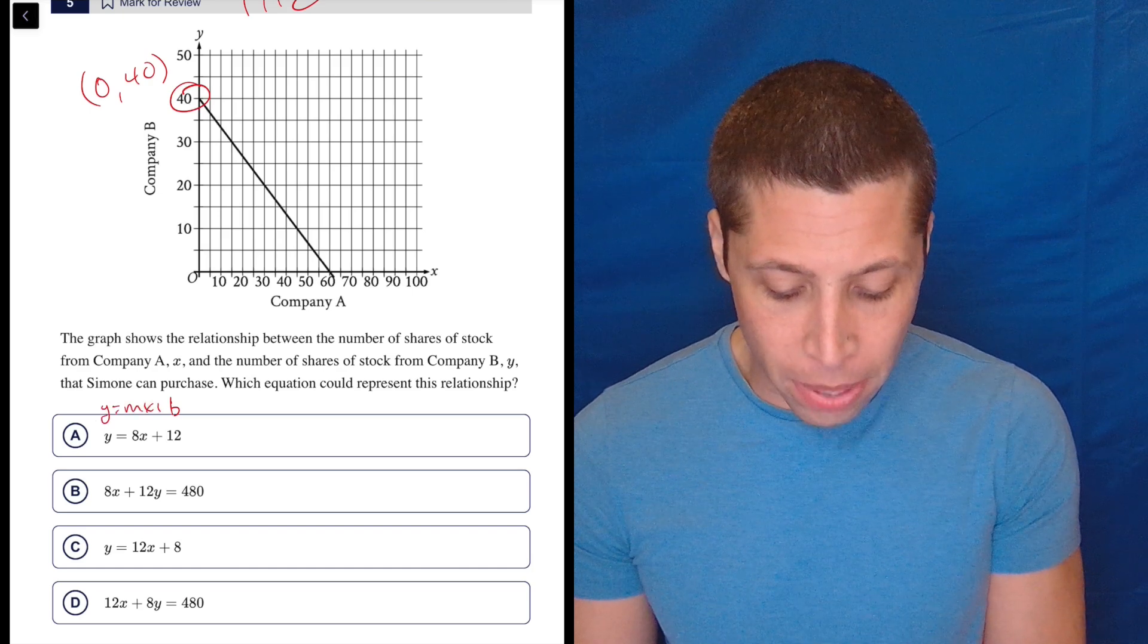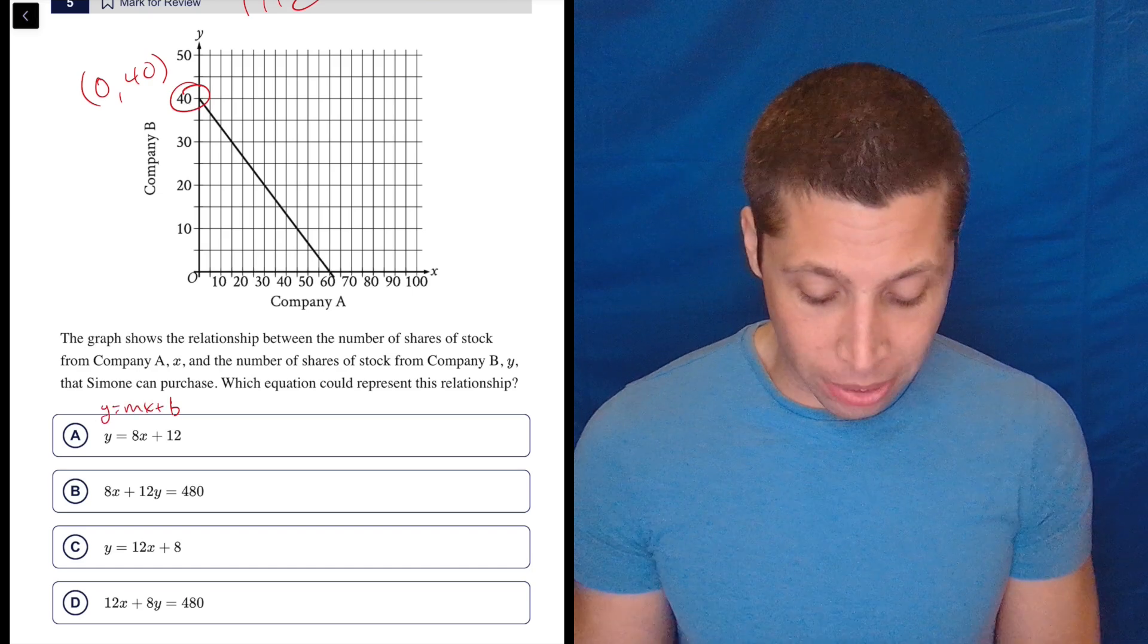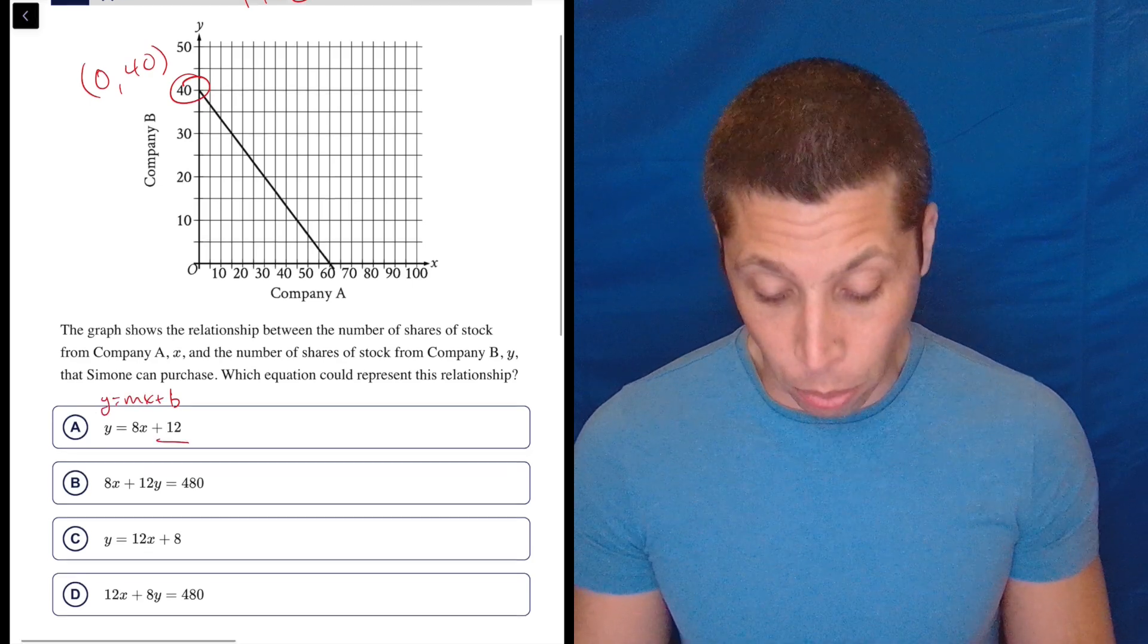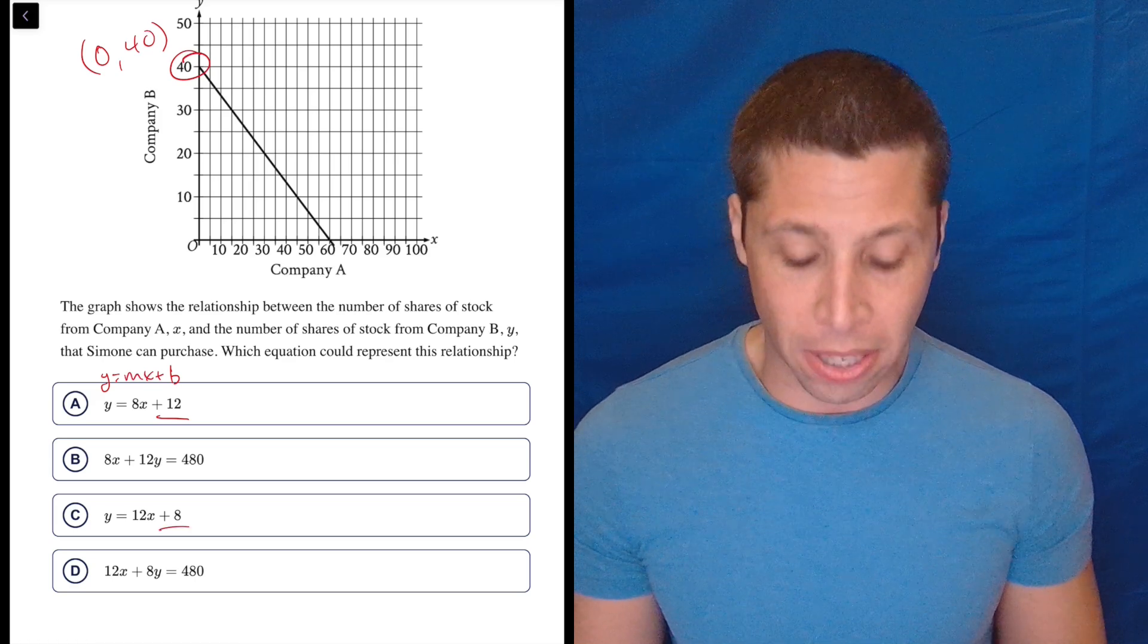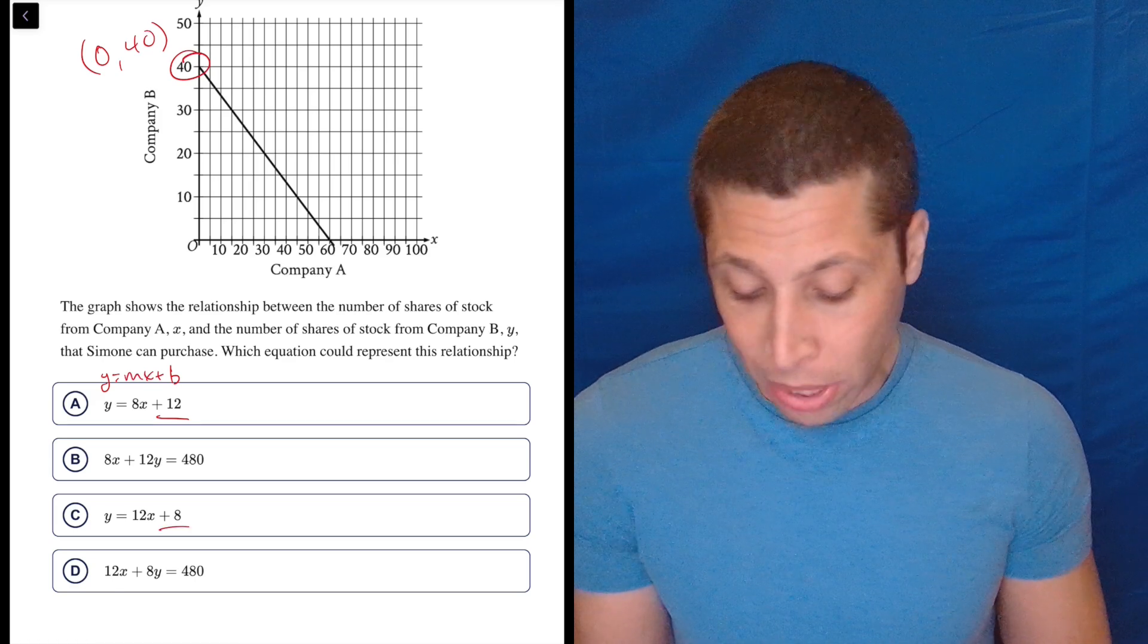Here it is, Y equals MX plus B, represents the Y-intercept anyway. So we can see here the Y-intercept is not 40, and same thing here, the Y-intercept is not 40, so we can cross them both out.